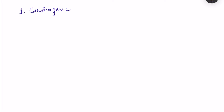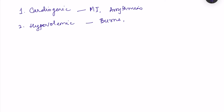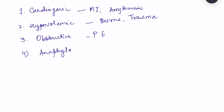To summarize the causes: cardiogenic shock is caused by heart problems such as myocardial infarction or arrhythmias. Hypovolemic shock results from decreased blood volume — for example, from excessive burns causing plasma loss, or trauma causing direct blood loss. Obstructive shock can be caused by pulmonary embolism. Anaphylactic shock involves excessive vasodilation — remember this is different from the other types.